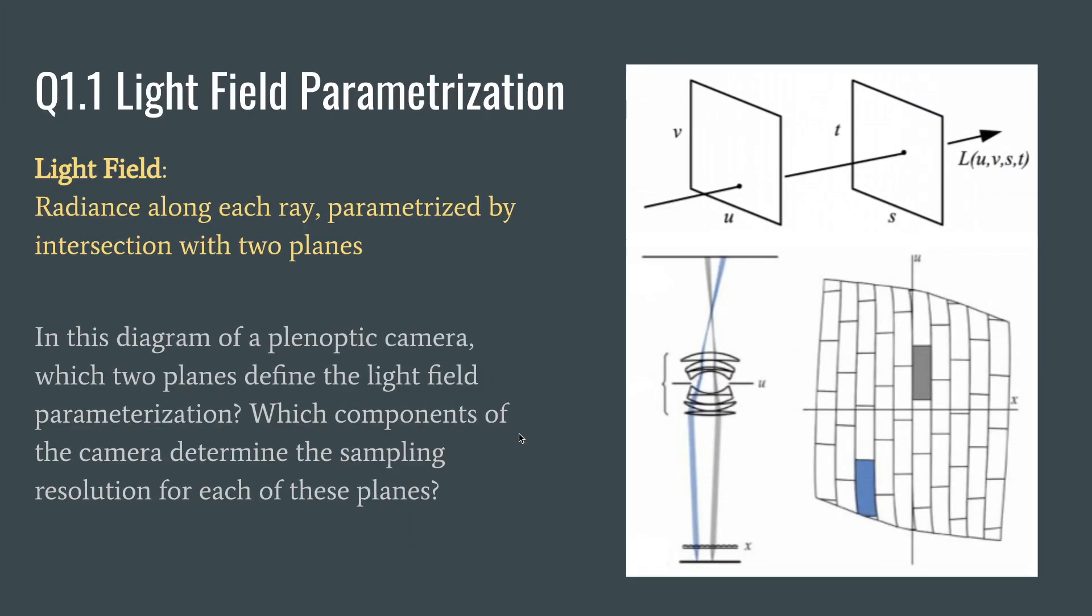Question one: Light field parameterization. A light field is radiance along each ray parameterized by intersection with two planes.